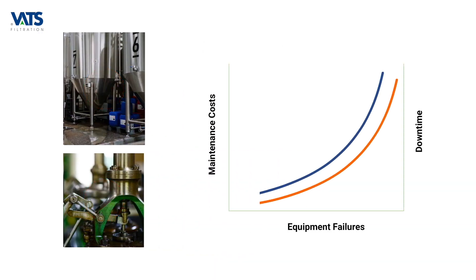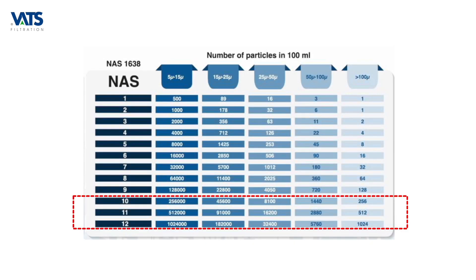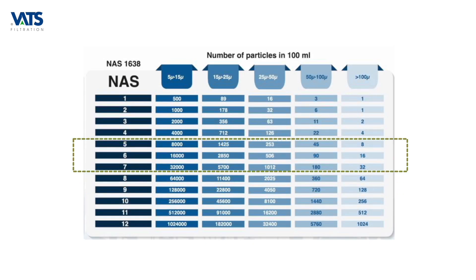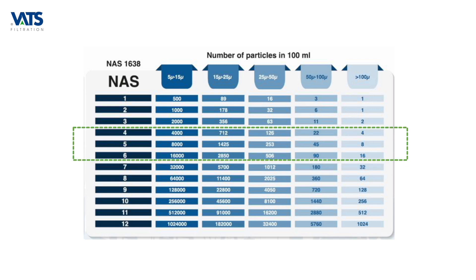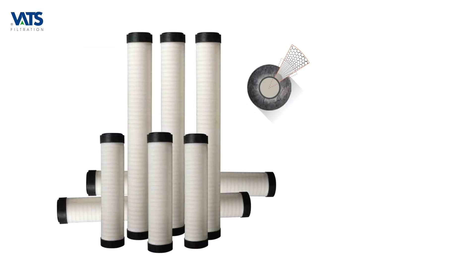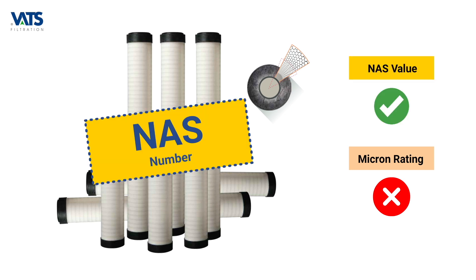Industrial plants today look beyond just the safety of the equipment and aim at eliminating downtimes and reducing maintenance costs. For this reason, they strive to maintain the NAS number of oils as low as possible at all times.